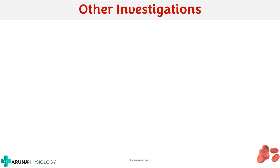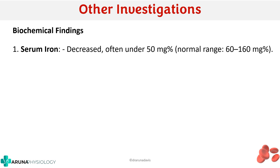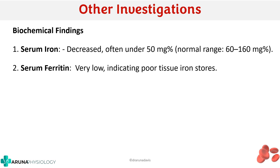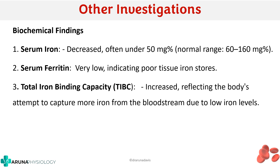Biochemical investigations include serum iron level, which is often decreased (normal: 60–160 µg/dL). Serum ferritin will also be very low, indicating poor tissue iron stores — ferritin is the storage form of iron. Total iron binding capacity (TIBC) will be increased, reflecting the body's attempt to capture more iron from the bloodstream due to the low iron levels.